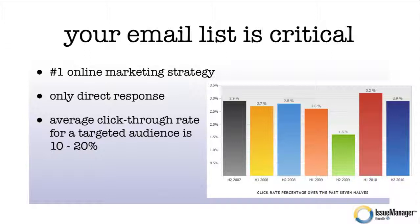People come to me and say, "Pete, I don't know, I don't like email. I just delete everything. I think email's on the way out." Well, what the data is telling us is no — actually the click-through rate on email is going up, and it's higher than it was a few years ago. Yes, it's still only three percent, but that's not bad across all industries. And if you look at the average click-through rate for a targeted audience — one that a niche magazine might have — the click-through rate is 10 to 20 percent. So keep that in mind.